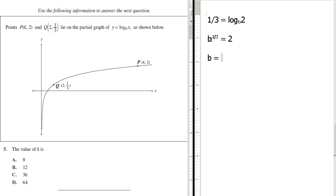So then the 3 times the 3rd will equal 1 and we'll just have b. And on this side, 2 cubed will equal 8. So now we know what b is.